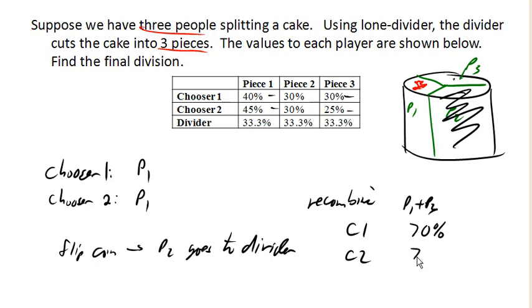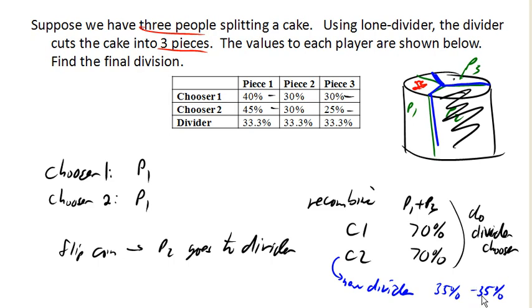And now, since there's only two people left, they can simply do the basic divider chooser method. In other words, one of them will become the new divider. And they will come up here and say, okay, I'm gonna redefine the cut here. So now here's the new piece one and piece three. And then the other player gets to choose their piece. Notice that, let's say this player is the new divider. They're gonna divide it up into two pieces, each worth 35%. Which means no matter which piece the chooser one then decides on, they're gonna get a piece that they value as 35%, which is a fair share. And we know the same is true of the other chooser. So all players will get a fair share in the end.